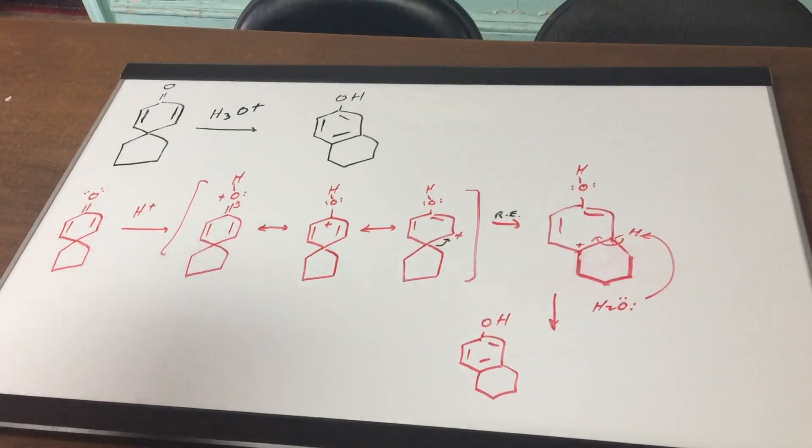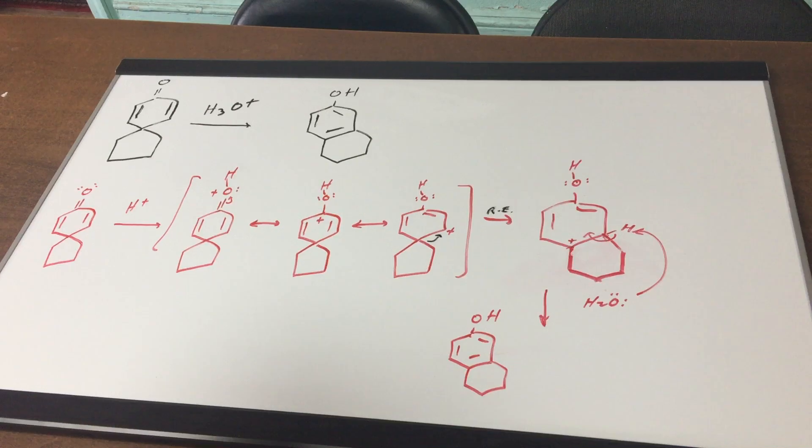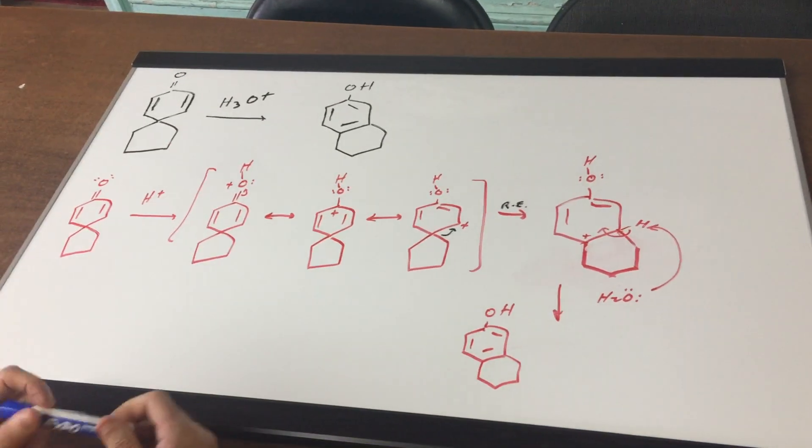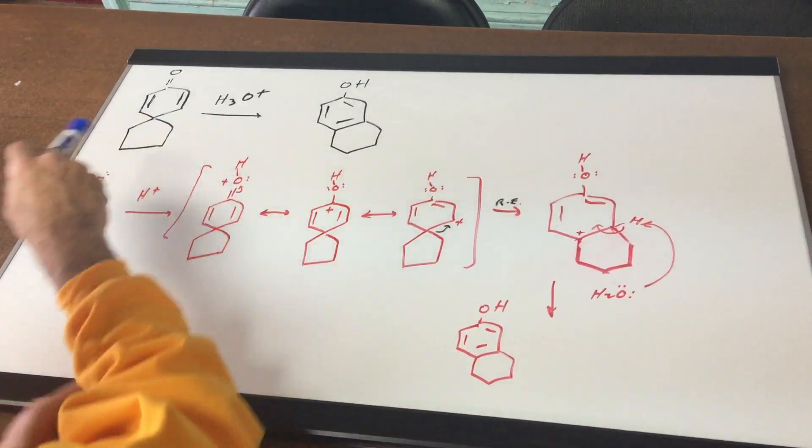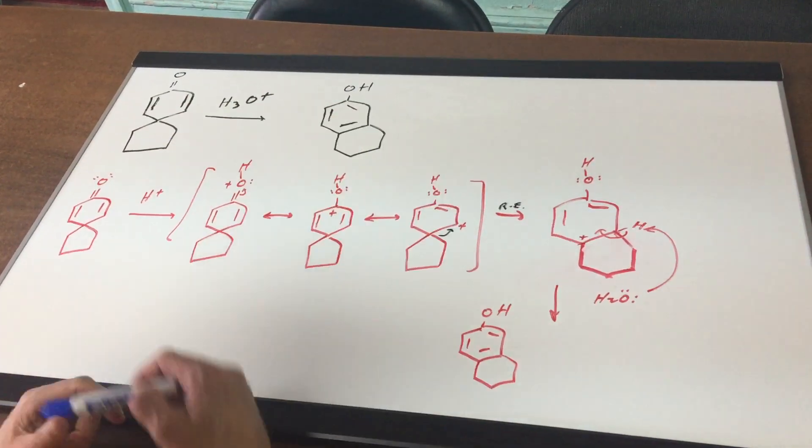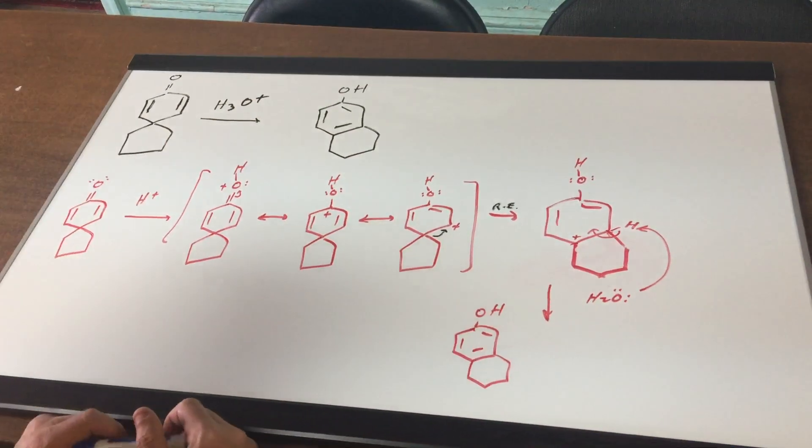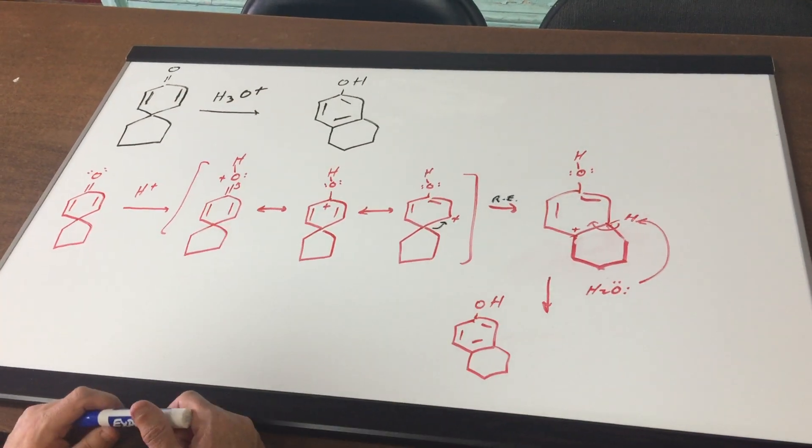When you first look at this problem it sort of looks really tricky. We're going from a conjugated spiroketone and we're going to add acid and form this benzene ring with an OH and make it into a phenol.